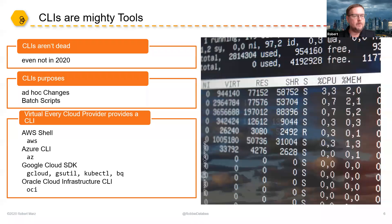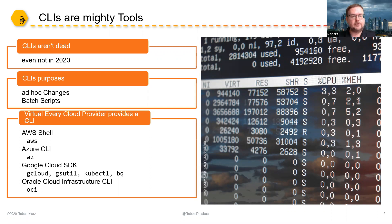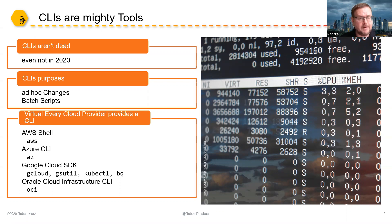Why are we here today? Why do I talk about command line interfaces in 2020? CLIs aren't dead - it's not all about moving mouse pointers over the screen. The command line is still there, especially in 2020. You will use them for doing ad hoc changes, or better, writing batch scripts. You can see that virtually every cloud provider provides its own CLI - at least all the hyperscalers. AWS has its own CLI called AWS, Azure has its own CLI, Google Cloud SDK has quite a few command line interfaces for different purposes, and of course we are going to talk about the Oracle Cloud Infrastructure CLI, which is called OCI.